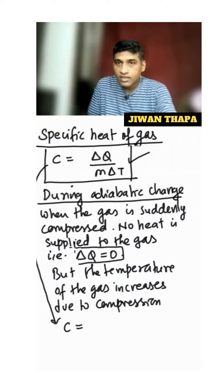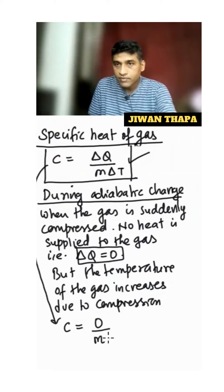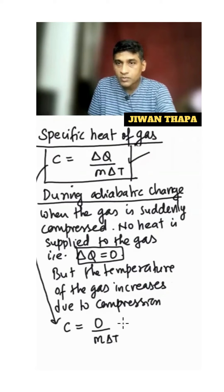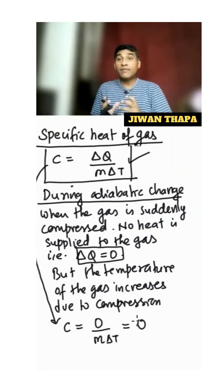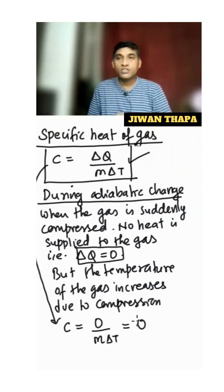So we have 0 divided by m and delta T. Therefore, the specific heat of a gas during adiabatic change is 0.